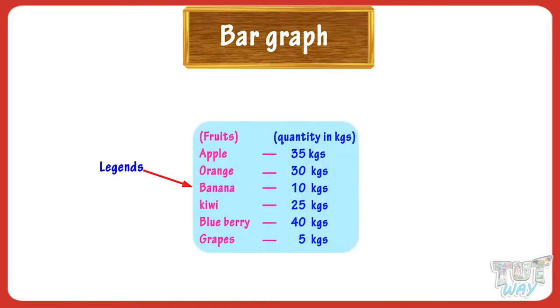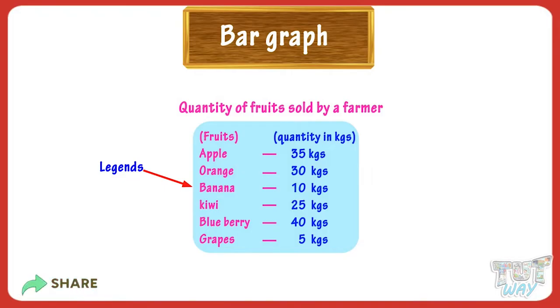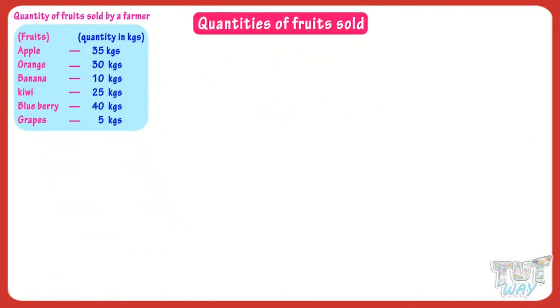Let's learn more about bar graphs using some examples. Here we have some data. A farmer sold different quantities of fruits in a particular month and recorded the sales. Now we will store this data in the form of a bar graph. First, determine the title of our bar graph — it can be 'Quantities of Fruits Sold.'